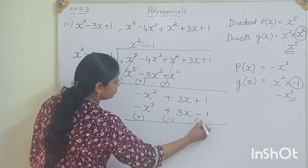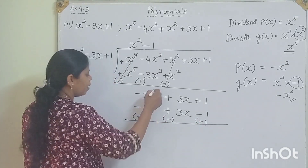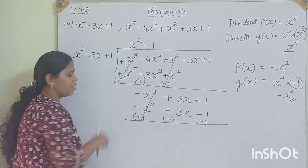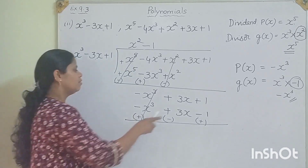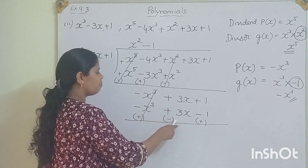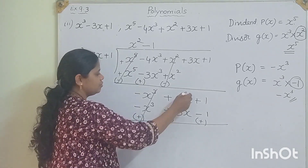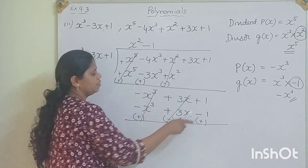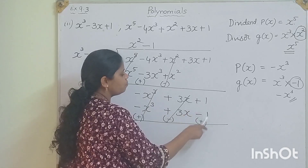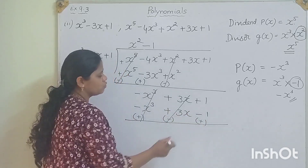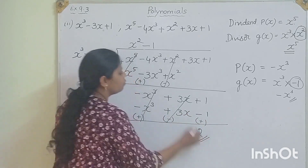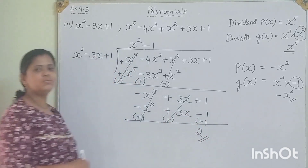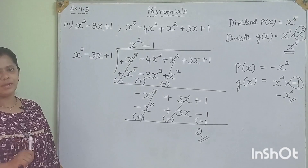We change the signs and subtract. Minus x cubed plus x cubed cancels. Plus 3x minus 3x cancels. Plus 1 plus 1 gives 2. We got 2 as the remainder.